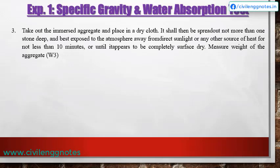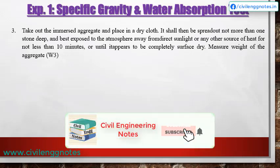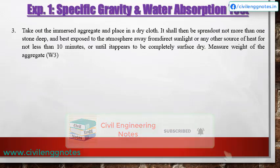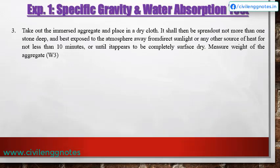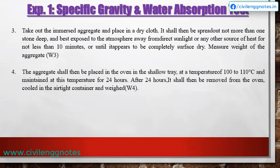Take out the immersed aggregate and place it in a dry cloth. Spread it out not more than one stone deep and expose it to the atmosphere away from direct sunlight or any other source of heat for not less than 10 minutes, or until it appears completely surface dry. Measure the weight of the aggregate as W3, then place the aggregate in the oven in a shallow tray at 100 to 110°C and maintain for 24 hours.